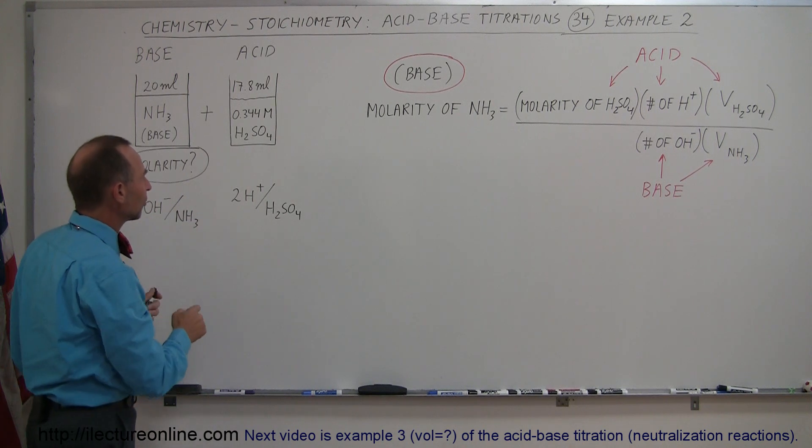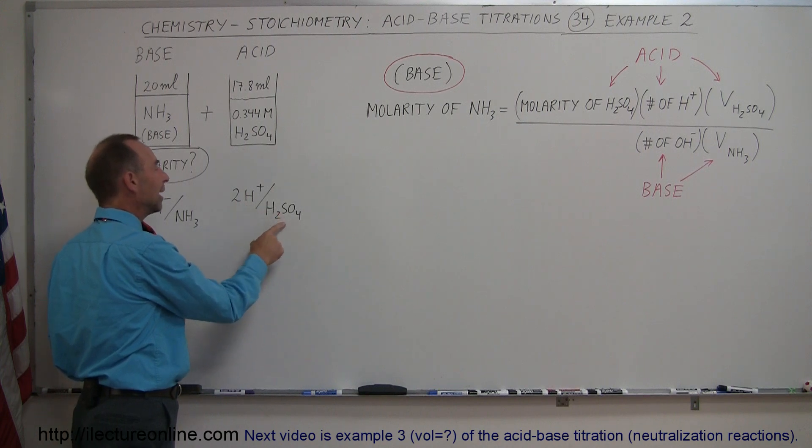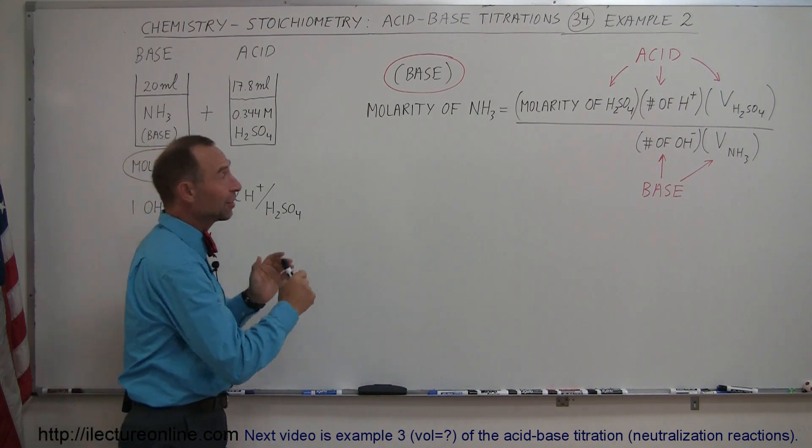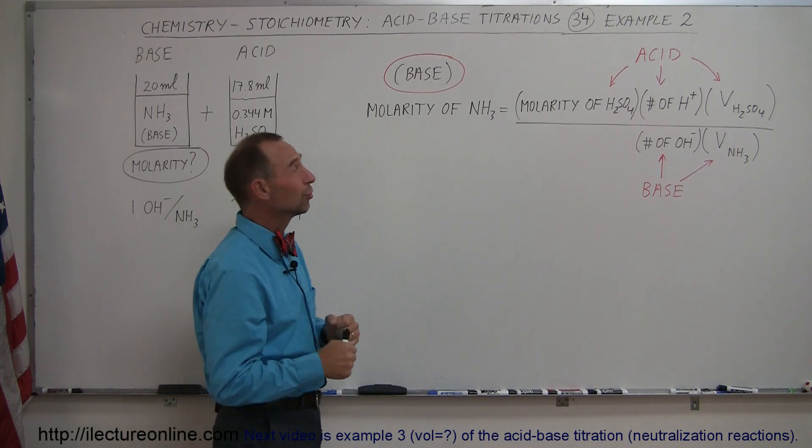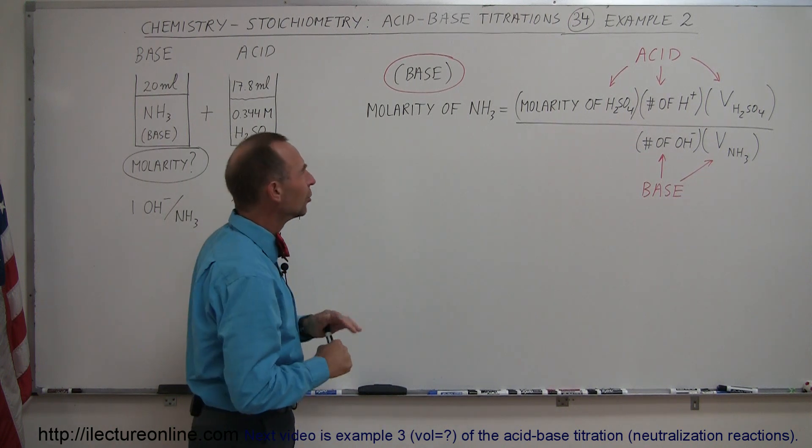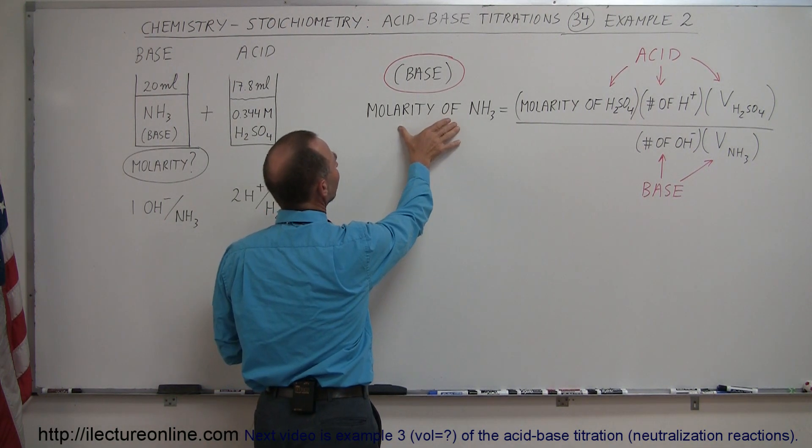Now, with sulfuric acid, sulfuric acid produces two hydrogen ions for every sulfuric acid molecule. Now, the equation that we have here before us is the one that we're going to use to solve these types of problems. And once you understand this equation, you'll see how easy it is really to do this. So here we have the question, what is the molarity of the base?